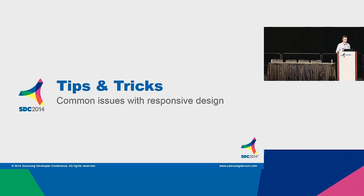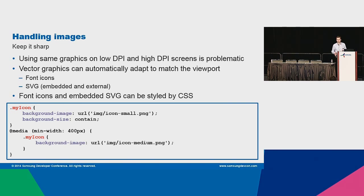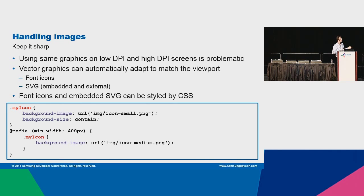There are also some tips and tricks which will be handy during responsive development. Handling images is actually an issue. It is good to use vector-based images because bitmaps are sometimes problematic — if you use too small a bitmap on a bigger device, it will be pixelated. You can avoid this using media queries to check if the device width is greater and swap the background image. For icons, the best are vector-based images like SVG. You can also use font icons.